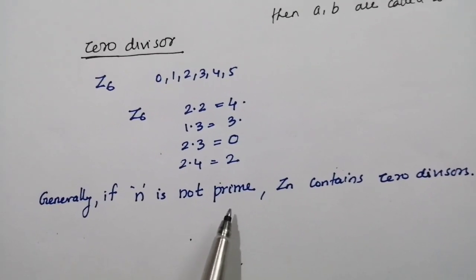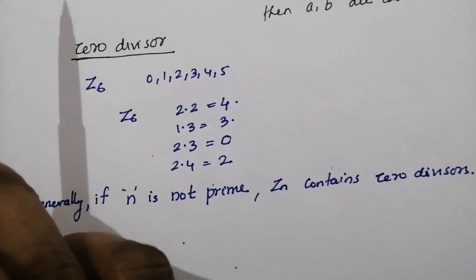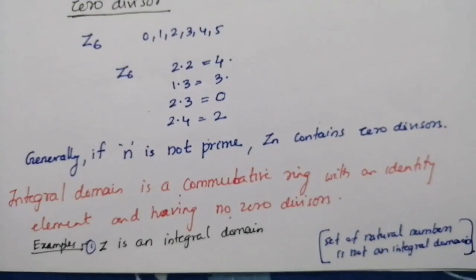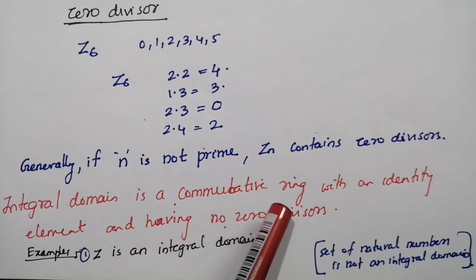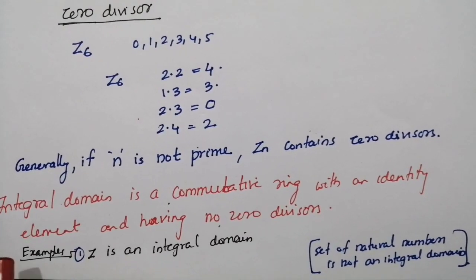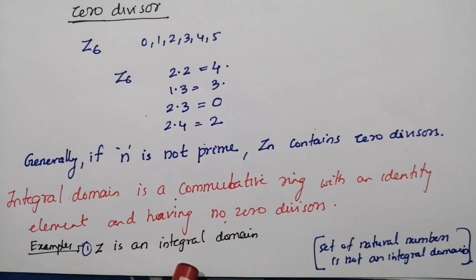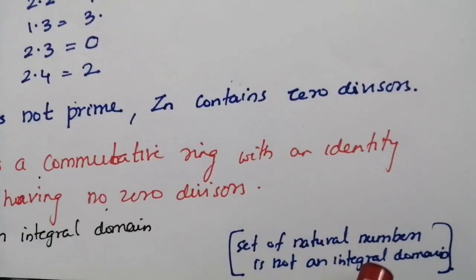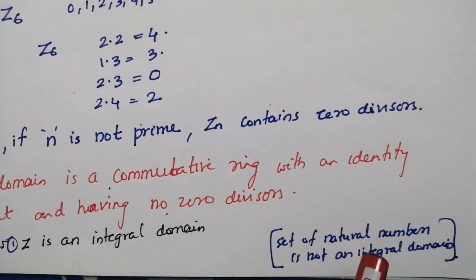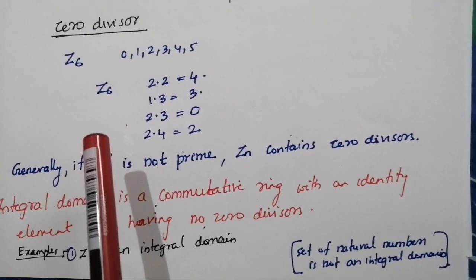Thus, an integral domain is a commutative ring with an identity element and having no zero divisors. For examples: the set of integers is an integral domain, but the set of natural numbers is not an integral domain because the set of natural numbers does not have an additive identity and therefore is not a ring.